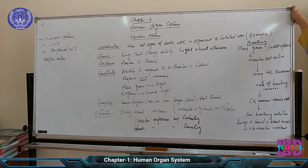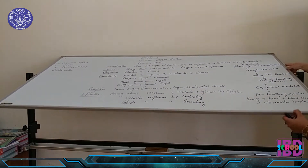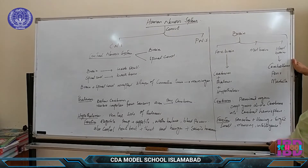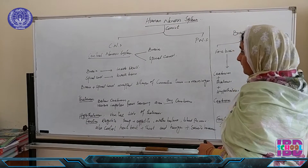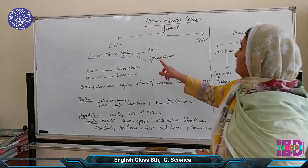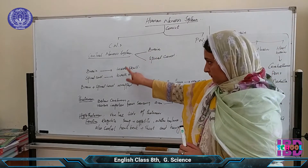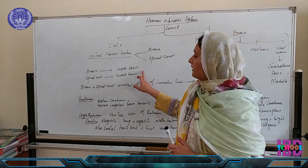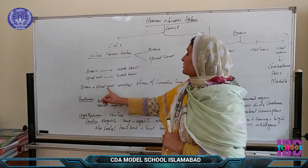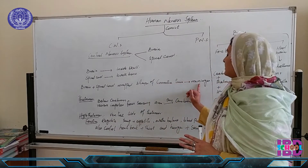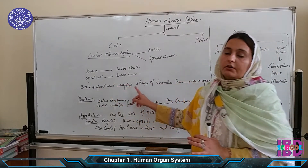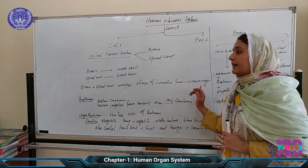The human nervous system consists of the central nervous system and the peripheral nervous system. The central nervous system comprises the brain and the spinal cord. The brain is protected inside the skull and the spinal cord is protected by the backbone. The brain and spinal cord are wrapped in three layers of connective tissue called the meninges.